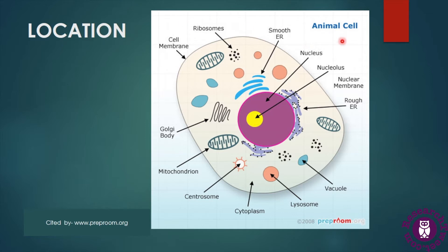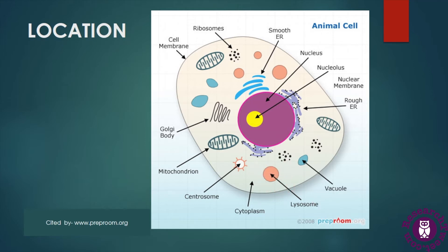Here in this picture we can see the anatomy of an animal cell which has different types of cellular or cytoplasmic organelles. We can see the plasma membrane of the cell, and at the core of this cell we can see the nucleus. In the cytoplasm there are different organelles like endoplasmic reticulum, ribosomes, Golgi bodies, and the spheres indicating lysosomes. This is the location of lysosome in the cell.